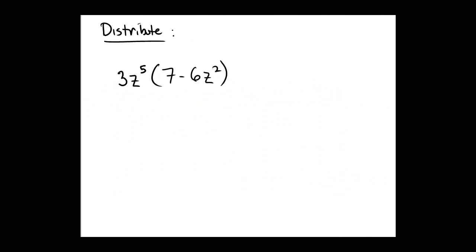For this problem, we're going to use the distributive property to multiply a monomial through a polynomial. So let me do some underlining here to help us organize.